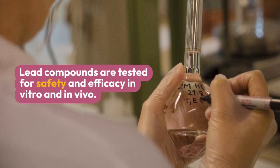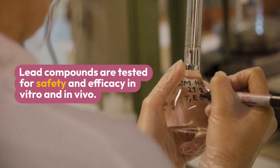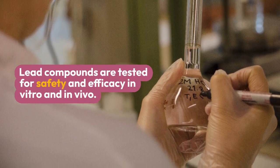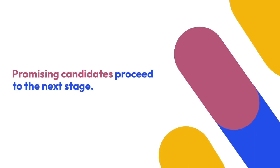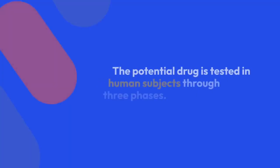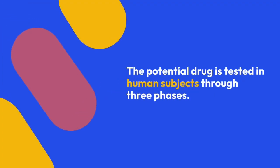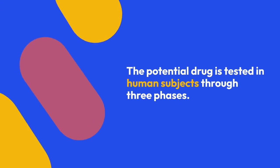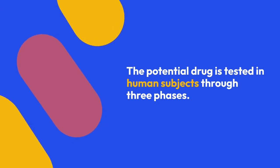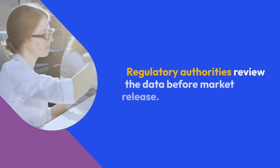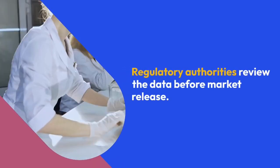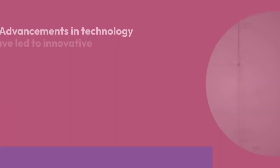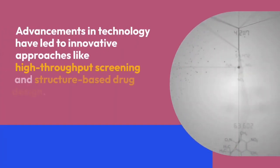Lead Generation: Once a target is identified, the next step is to find lead compounds that can interact with the target and modulate its activity. High-throughput screening, virtual screening, and combinatorial chemistry techniques are employed to identify potential drug candidates from large compound libraries or through computer-aided design. These compounds are further optimized for desired properties such as efficacy, selectivity, and safety.